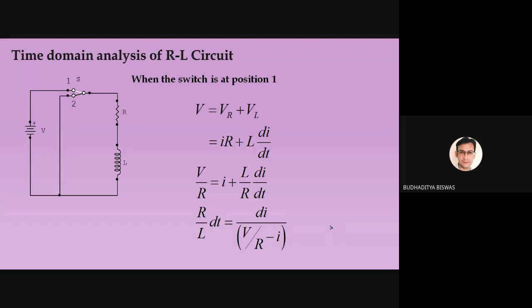If we connect a voltage source across a capacitor, the same voltage is ultimately stored across the capacitor but it doesn't happen instantly — it takes some time. So we will find out how much time is required and what is the graph of current or voltage varying due to these two components: the inductor and the capacitor.